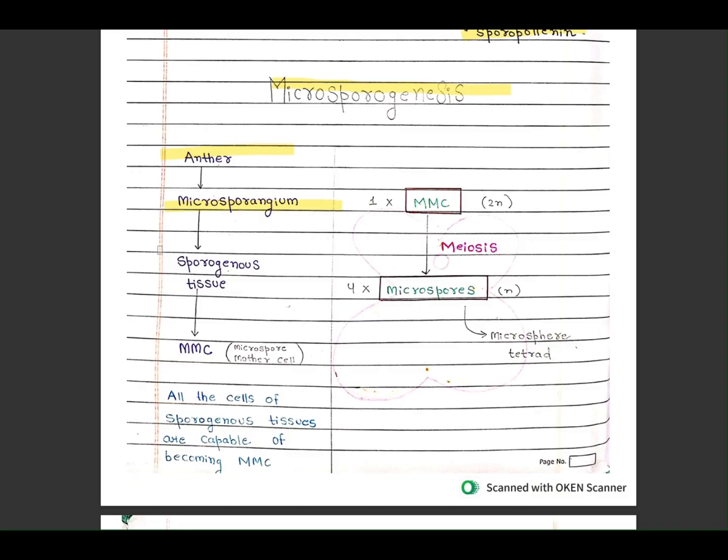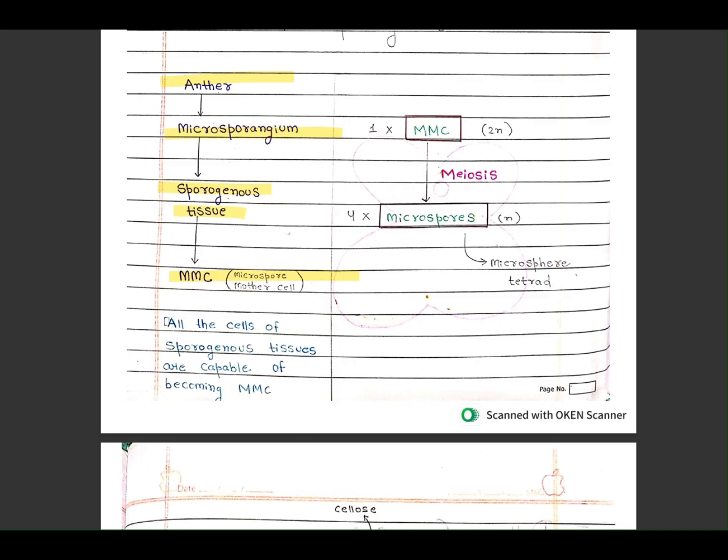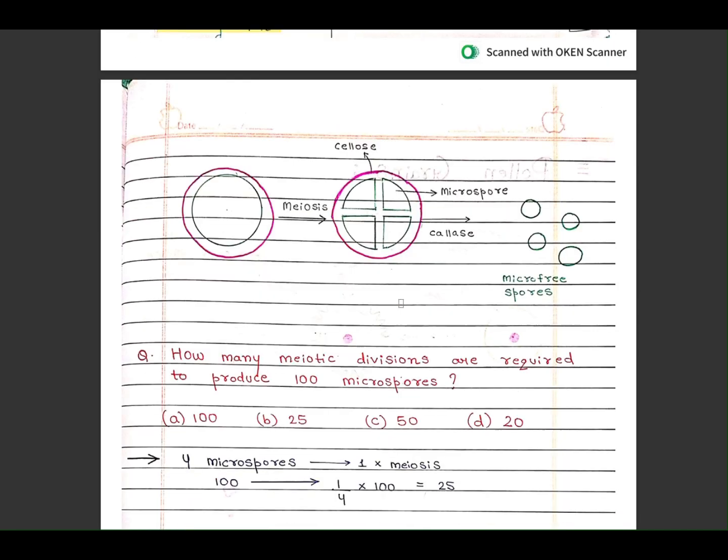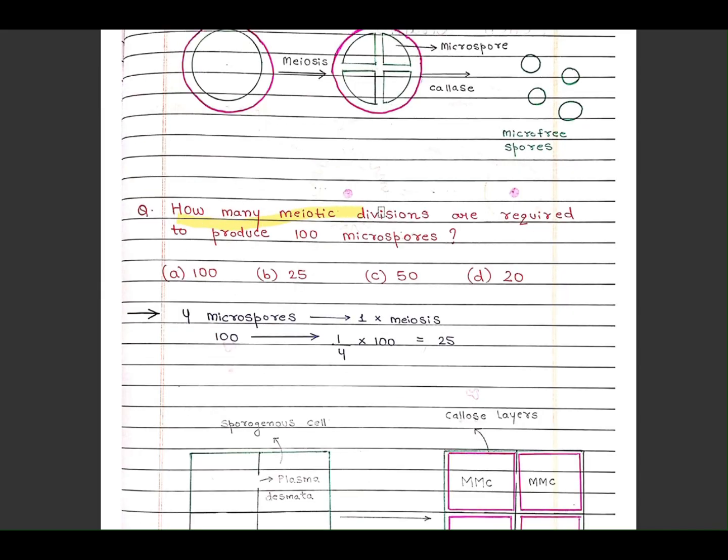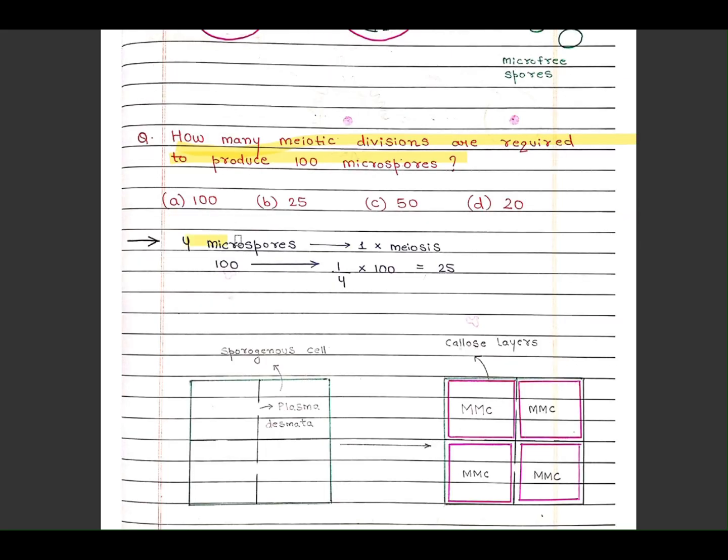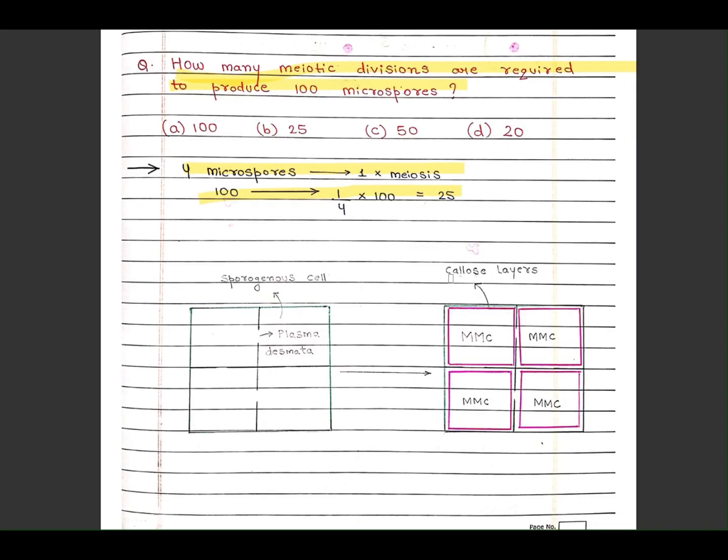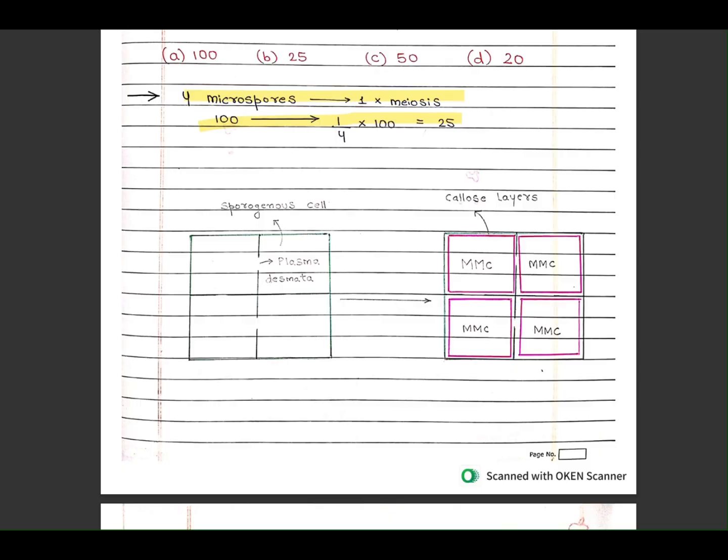Microsporogenesis: anther microsporangium contains sporogenous cells which become microspore mother cells. All cells of sporogenous tissue are capable of becoming microspore mother cells. Now question is how many meiotic divisions are required to produce 100 microspores? 4 microspores equals 1 meiosis, so 100 divided by 4 equals 25. The correct answer is option B, 25.